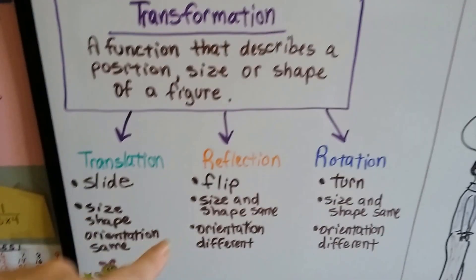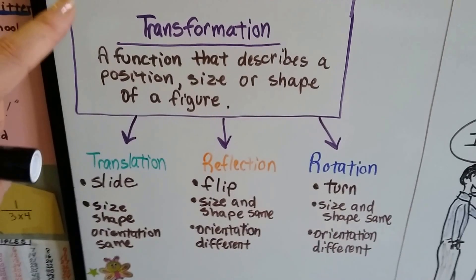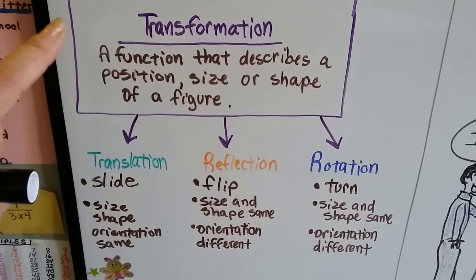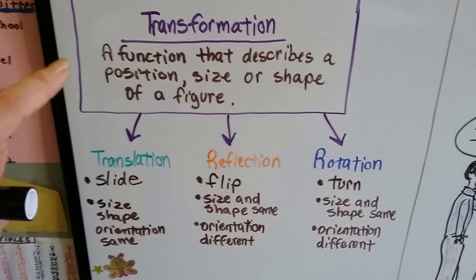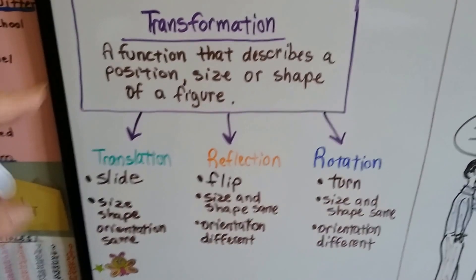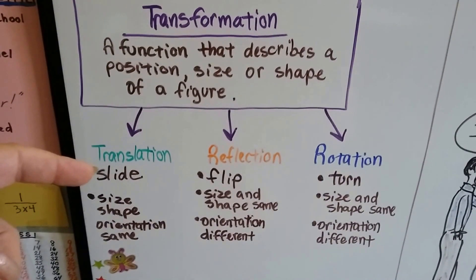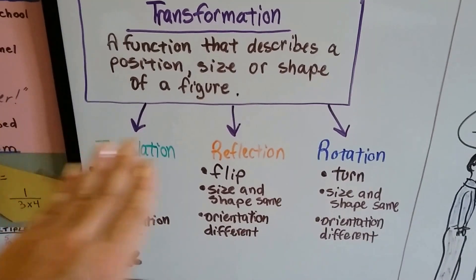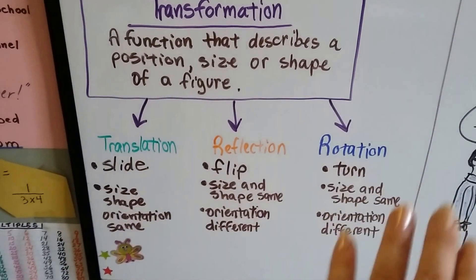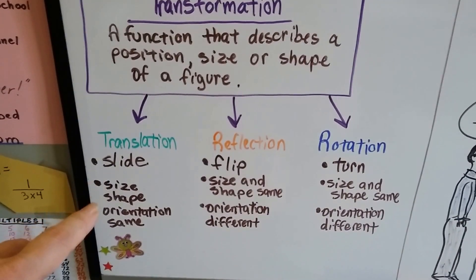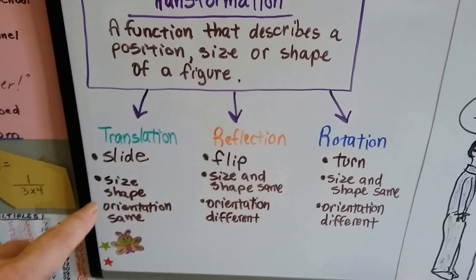So, this is what we've covered so far. We've covered these transformations and their functions that describe a position, a size, or a shape of a figure. We talked about translations, which are sliding, the figure just slides, and the size and the shape and the orientation all stay the same in a translation.